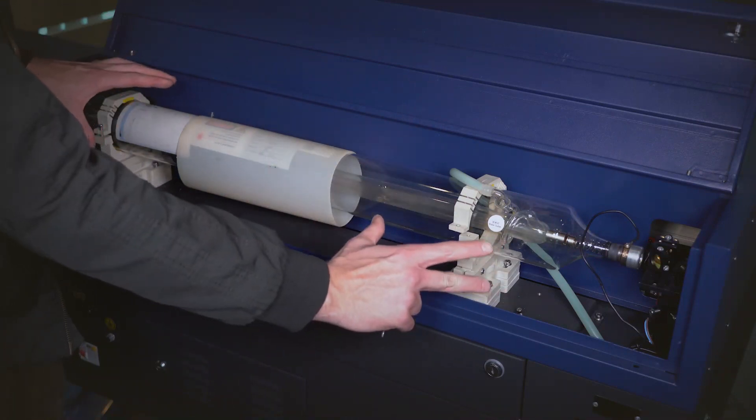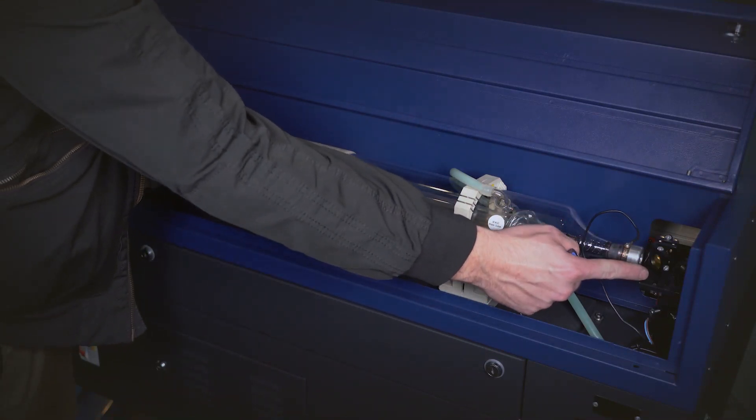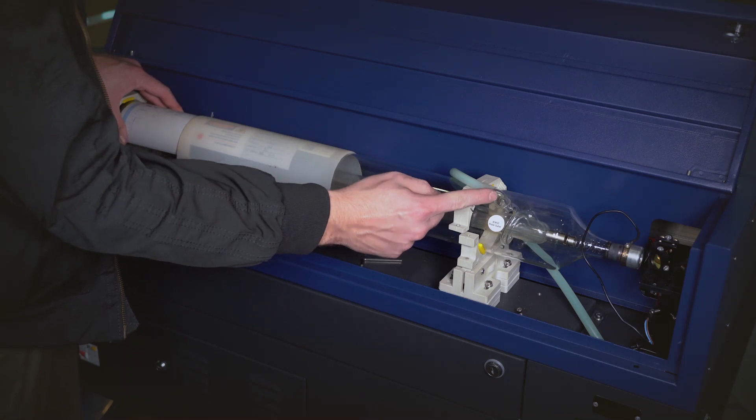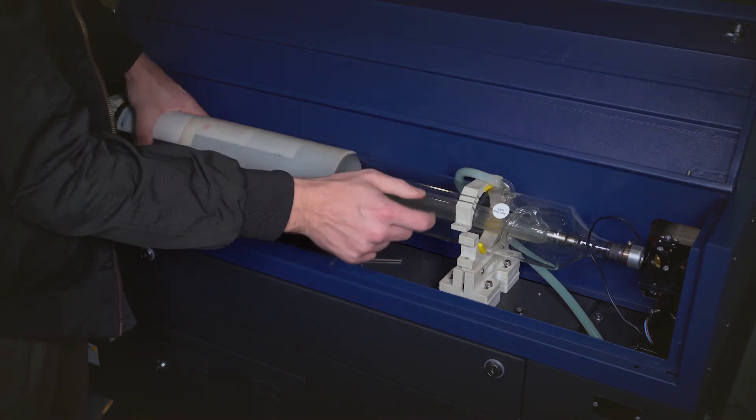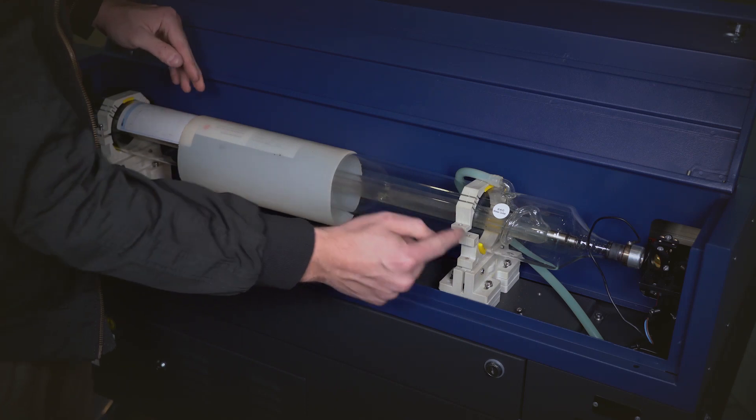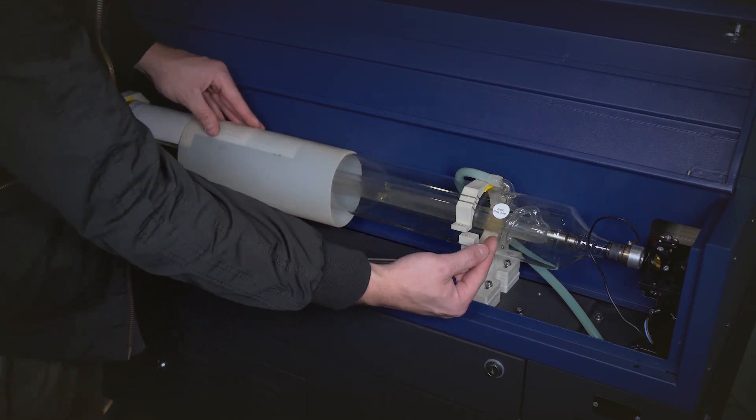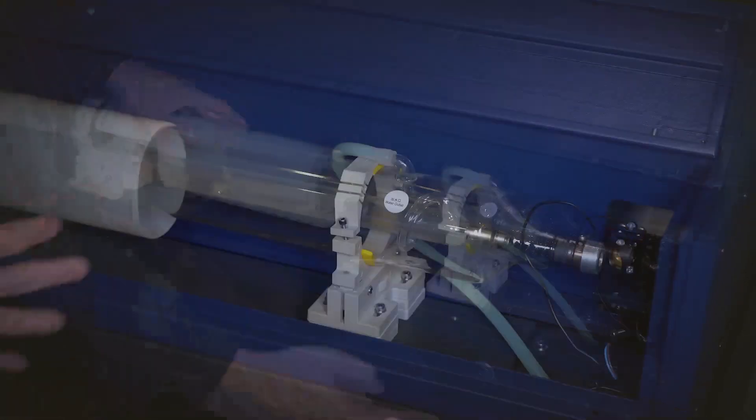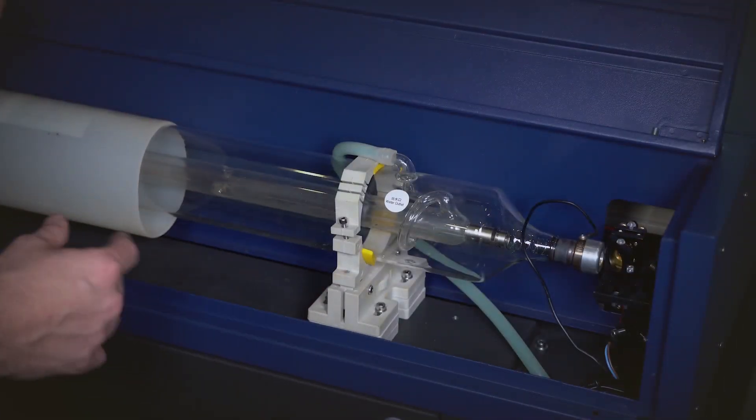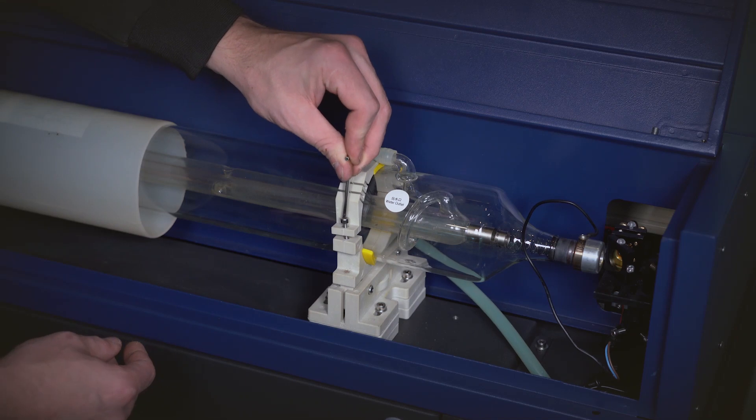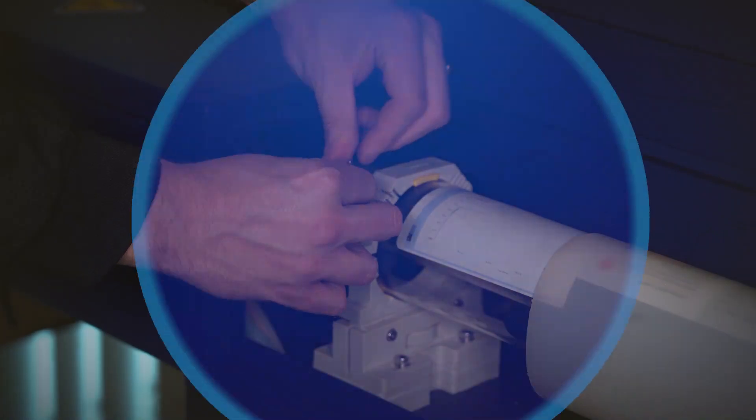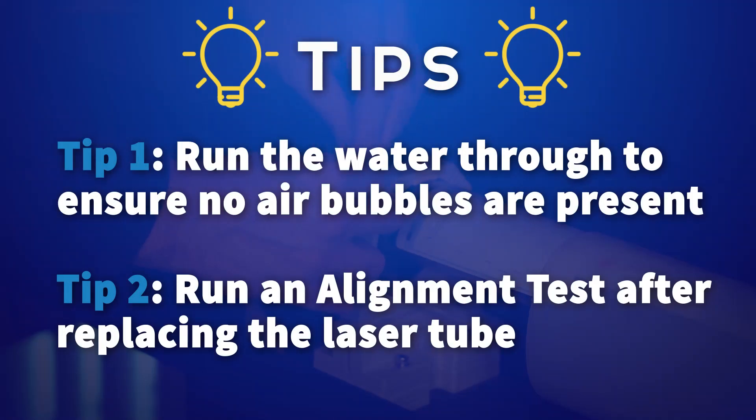Now that the tube is in its general position, not touching the actual beam combiner, we're going to spin it until this water line is faced up. And the reason for that is so that when the water goes through, the air bubbles go straight up and out the tube. Now that the tube is in its final position, we're going to tighten these bolts and remount the tube.